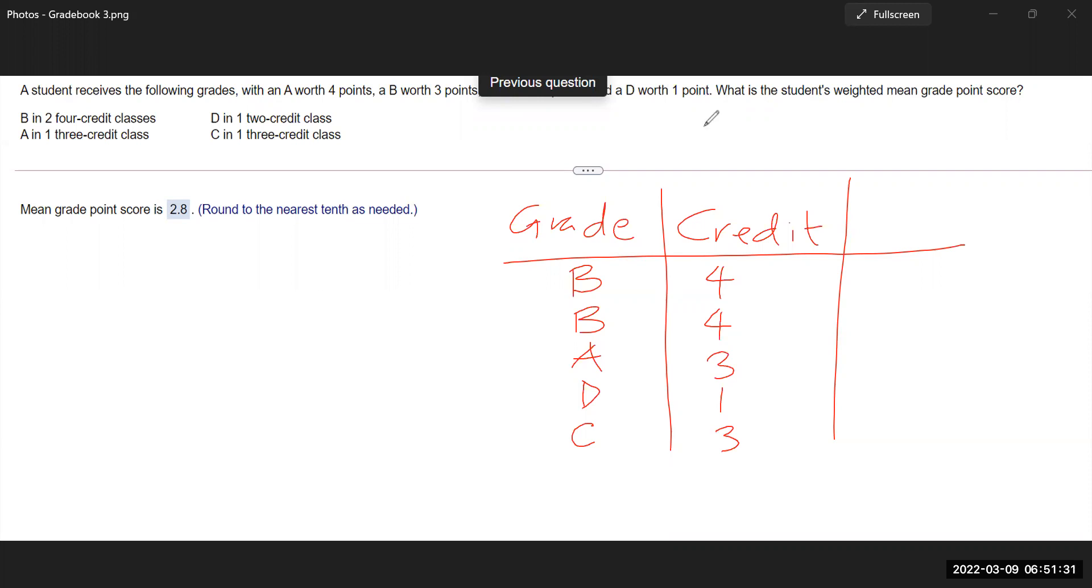Each of the letter grades has a different weight. We read that A is worth four points. B is worth three points. C is worth two. D is worth one. So now let's put the corresponding weights against each of the letter grades.